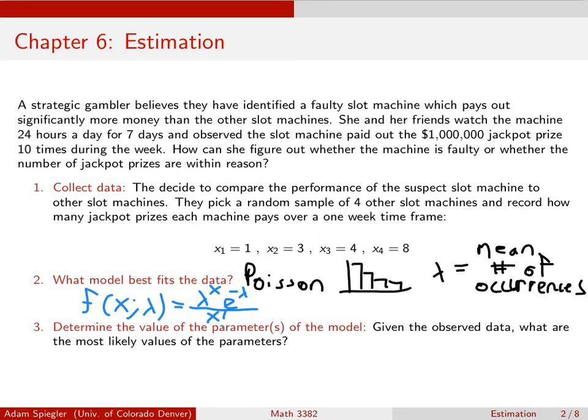Okay, well, to determine that, let's first consider what is the probability of even getting this data set. What's the probability that X1 would equal 1 and X2 would equal 3, and X3 equals 4, and X4 equals 8? Well, since these are independent events...